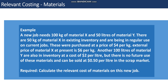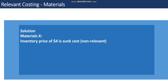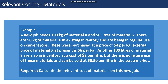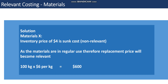Calculate the relevant cost of materials on this new job. For Material X: the inventory price of four dollars is sunk, so it is not relevant. The materials are in regular use, therefore the external or replacement price becomes relevant. We need 100 kilos, so 100 kilos times six dollars — that is the relevant cost for Material X.